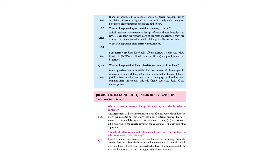Question 18: what will happen if bone marrow is destroyed? Bone marrow produces blood cells — RBC (red blood corpuscles), WBC (white blood corpuscles), and platelets. If bone marrow is destroyed, RBCs, WBCs, and platelets will not be formed.